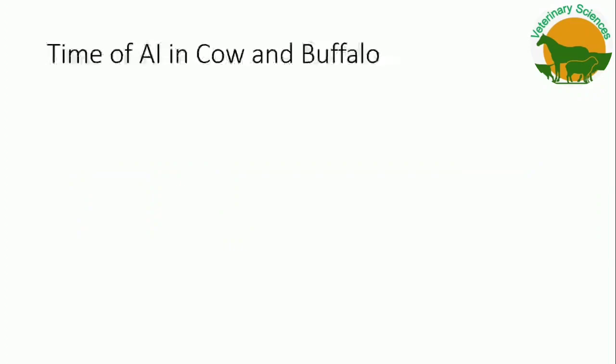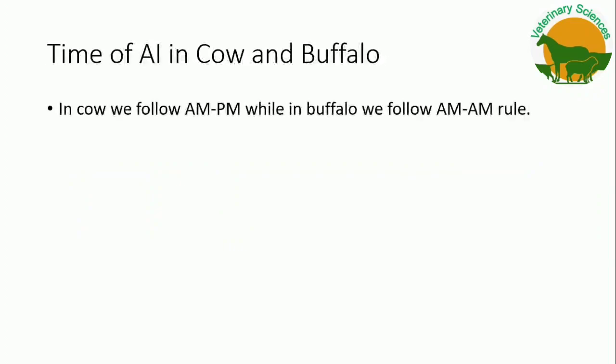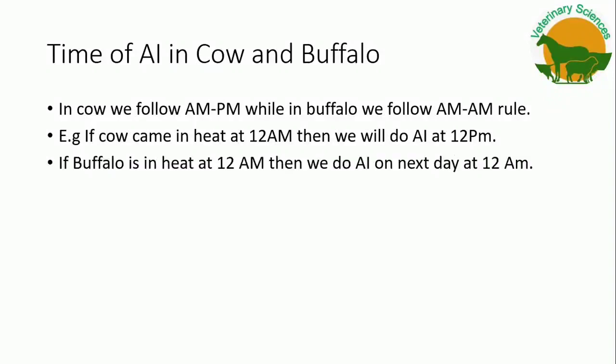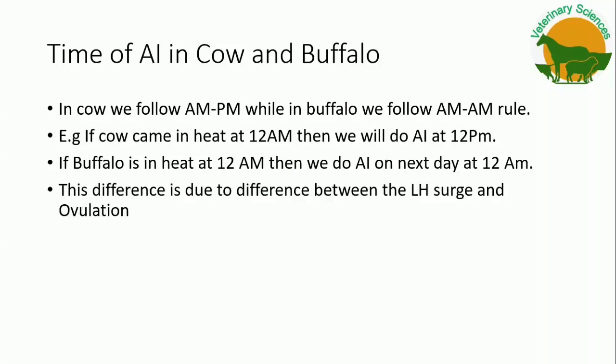In cows we follow the AM-PM rule, while in buffalo we follow the AM-AM rule. For example, if a cow comes in heat at 12 AM, we do AI at 12 PM. If a buffalo is in heat at 12 AM, we do AI the next day at 12 AM. This difference is due to the difference in the time of the LH surge and ovulation between the two species.